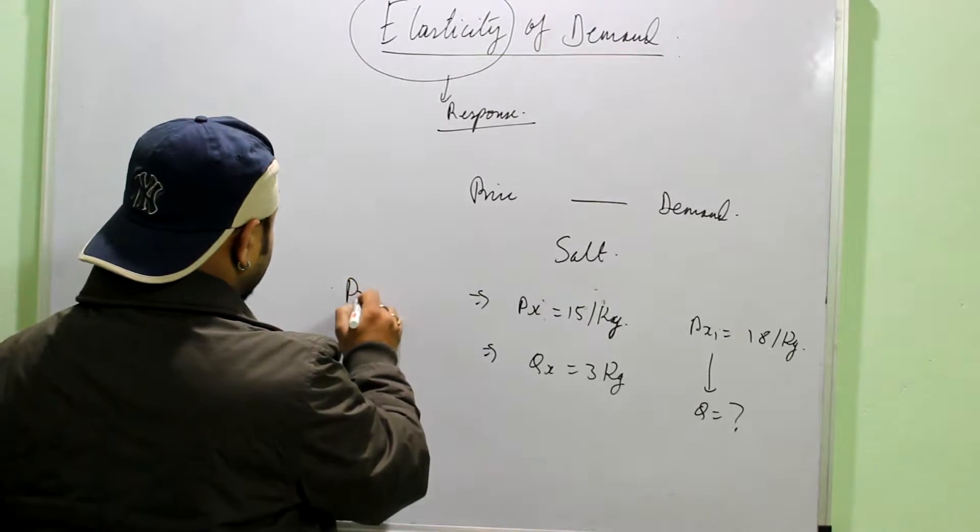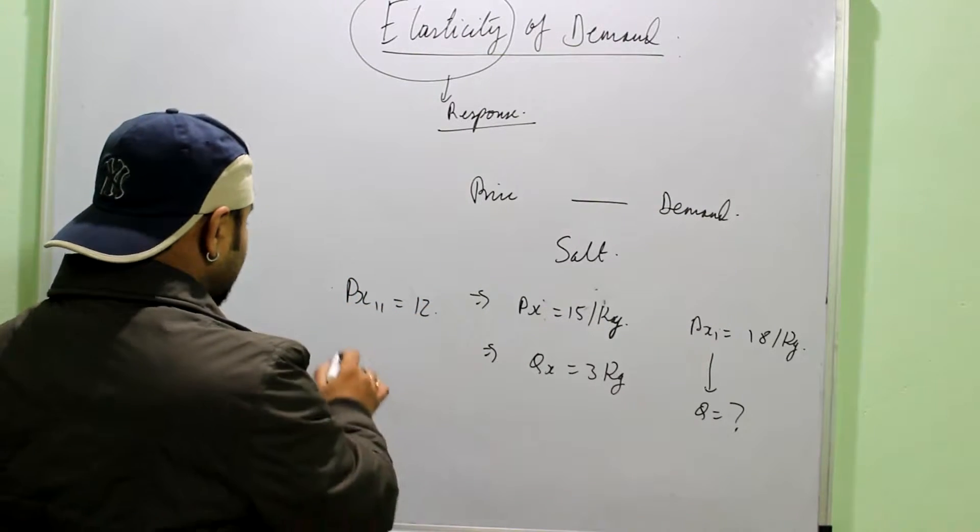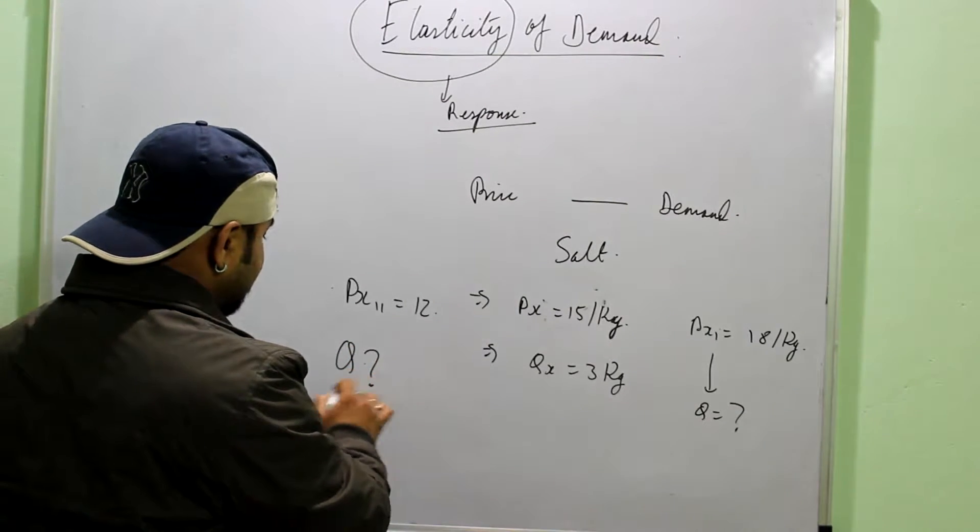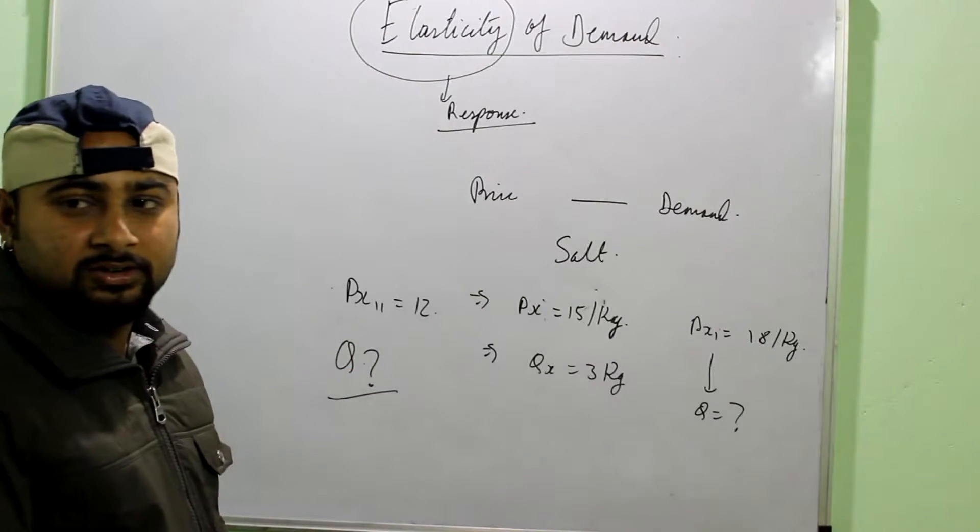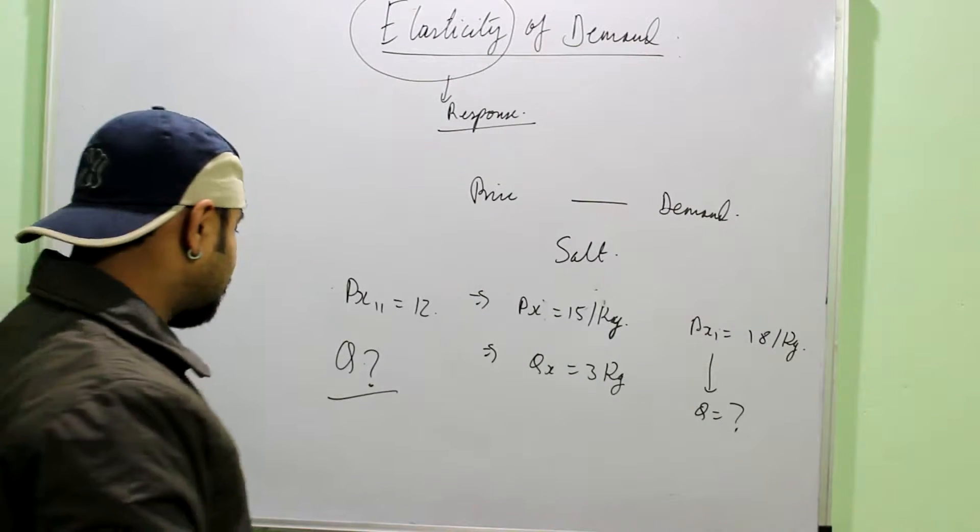Similarly, if the price falls to say 12. Then do you think that the family will increase the demand of salt? No. You cannot use it anywhere. You cannot put 2 spoons instead of 1 spoon of salt.